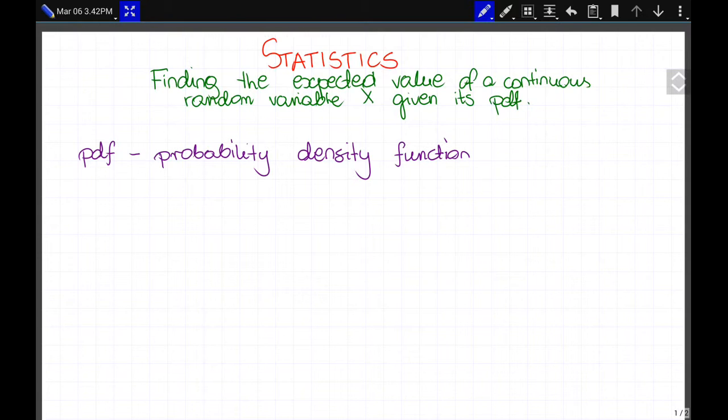Our PDF is a probability density function. Say we have our PDF given by f(x) equals x cubed over 60 for x in the interval from 2 to 4.